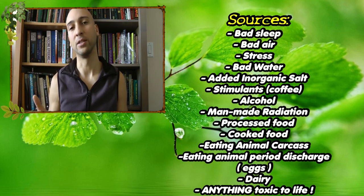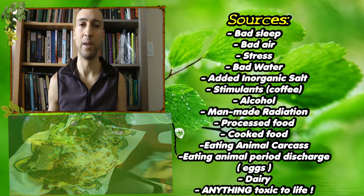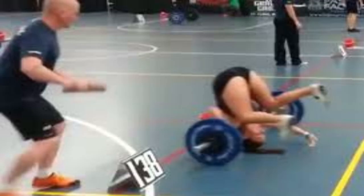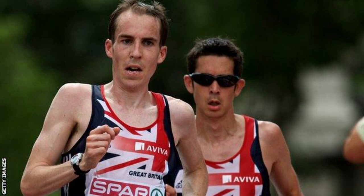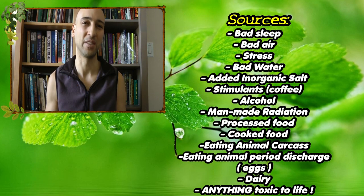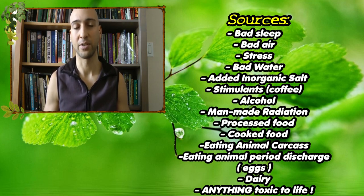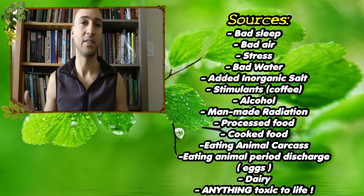A poor diet will cause free radical damage. Eating food that is highly processed and highly cooked will cause free radical damage. Bad, unhealthy water laden with inorganic minerals will cause free radical damage. Exercise also produces free radicals, which is one reason why excessive exercise cannot be a good thing — you create too many free radicals for your body to manage. Excess cardiovascular activity especially is something you don't want to overburden yourself with; a balanced approach to exercise is what you want.